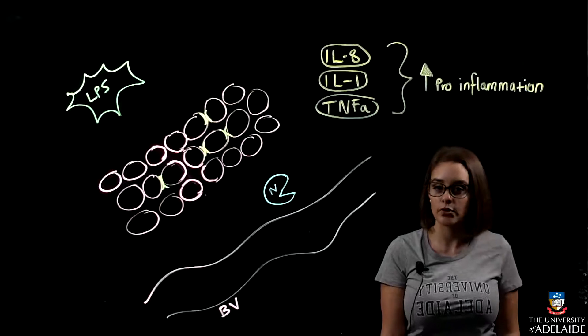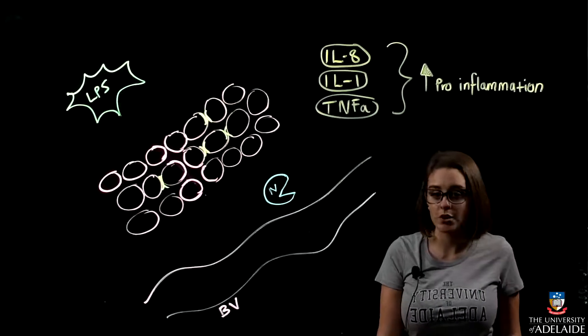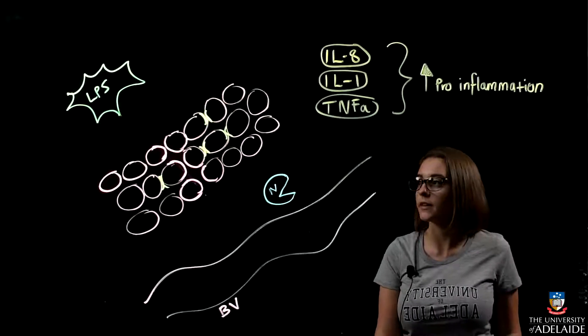Hi guys, so in our last video we talked about the structure of the junctional epithelium. We also at the end mentioned LPS, which is an endotoxin which drives the pathogenesis of gingivitis.